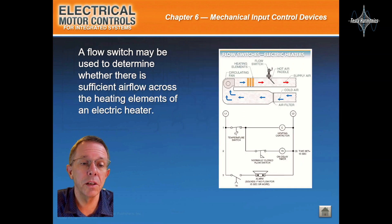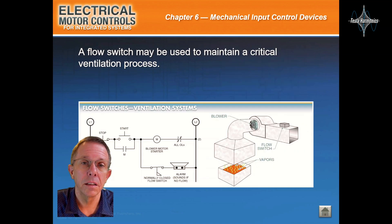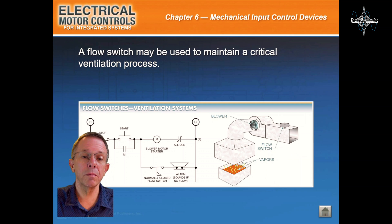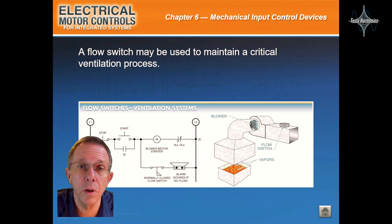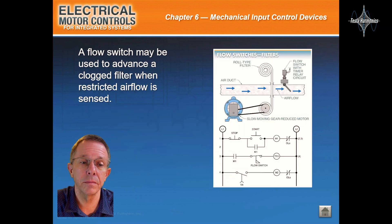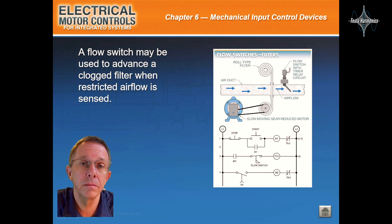A flow switch may be used to determine whether there is sufficient air flow across the heating elements of an electric heater. A flow switch may be used to maintain a critical ventilation process. A flow switch may also be used to advance a clogged filter when restricted air flow is sensed.